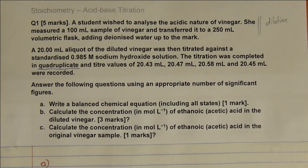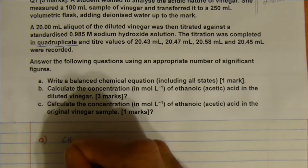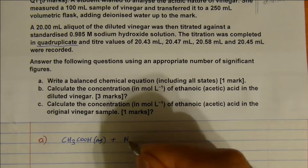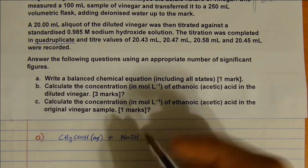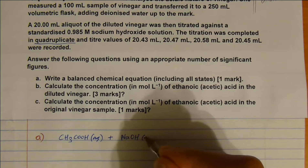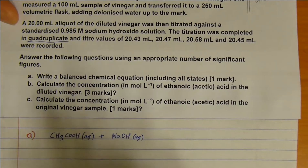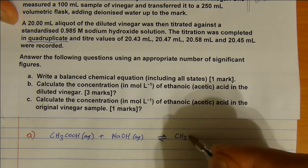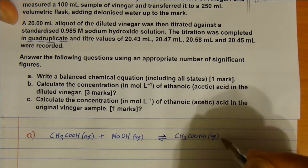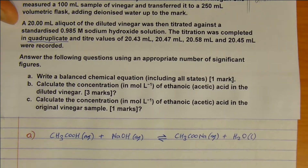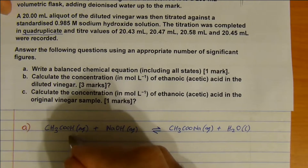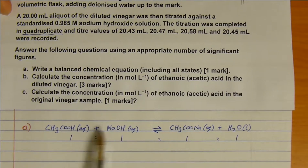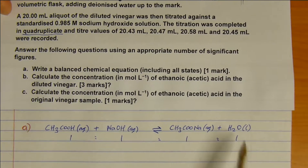Part A: let's write a balanced chemical equation. I've got my acetic acid, CH₃COOH — it's a carboxylic acid — plus my sodium hydroxide, NaOH, aqueous. An acid and a base creates a salt, so the products are CH₃COONa aqueous and water, H₂O. That's my balanced chemical equation. The mole ratios are 1 to 1 to 1 to 1, because we simply swapped the Na and the H.